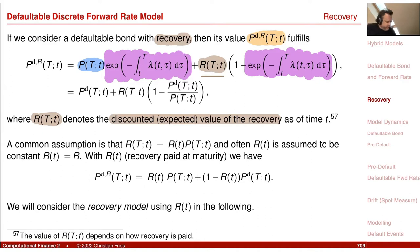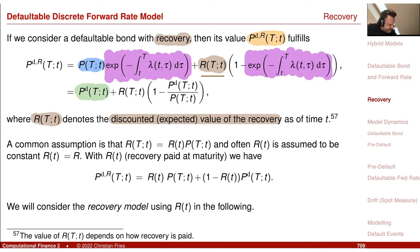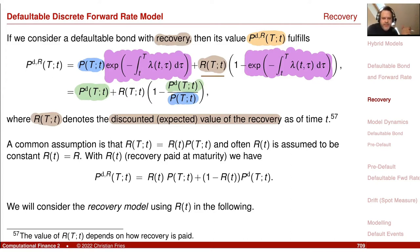The first part is just the defaultable zero-coupon bond with zero recovery. The survival probability is defined by this object. I can represent this part as the ratio of the two zero-coupon bonds — the defaultable one divided by the non-defaultable one.